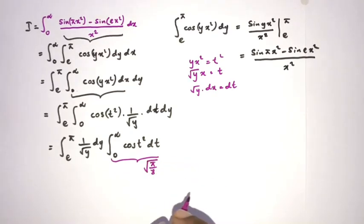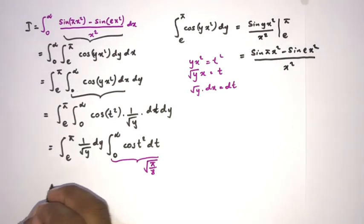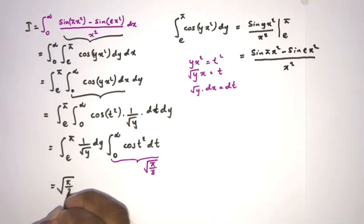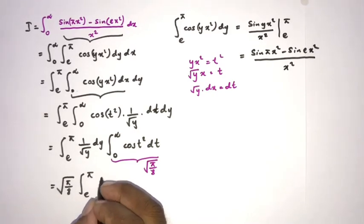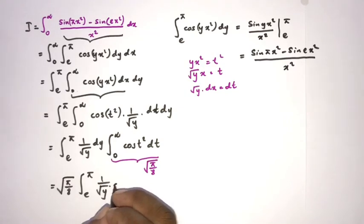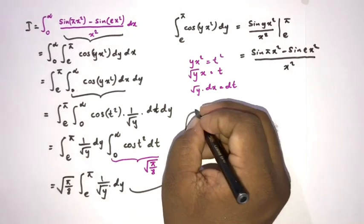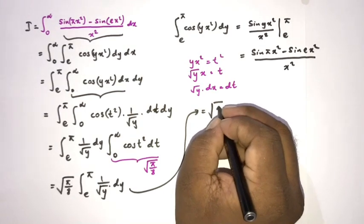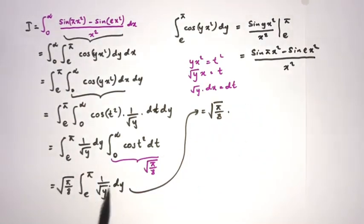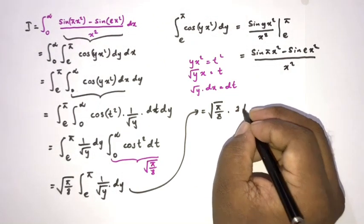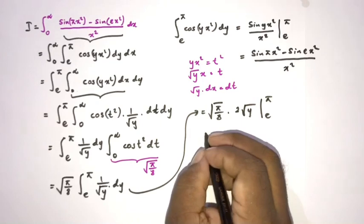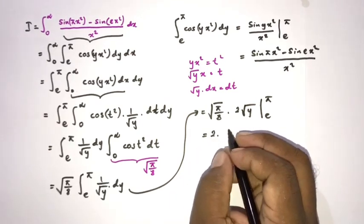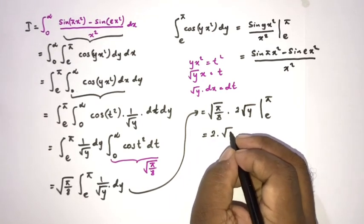Therefore we can write the square root of pi over 8 times the integral from e to pi of one over the square root of y dy. The integration of one over the square root of y equals two times the square root of y, evaluated from the limit e to pi.